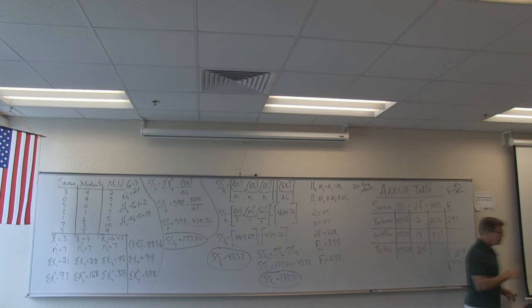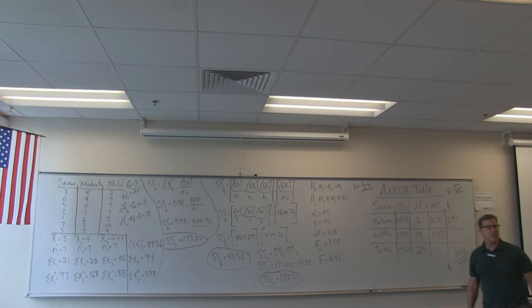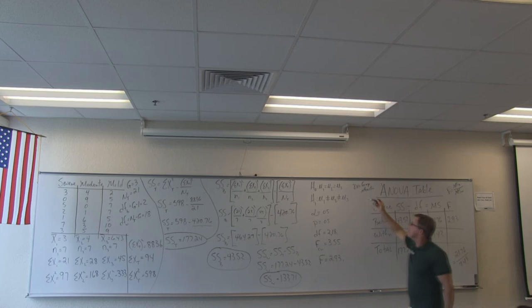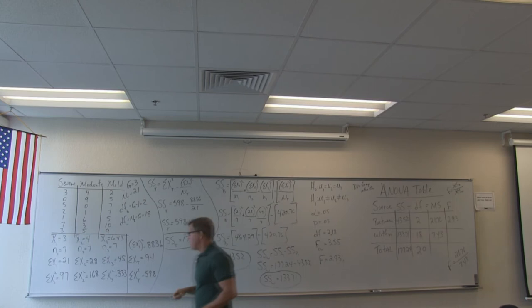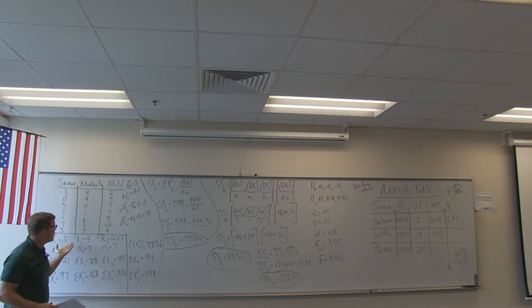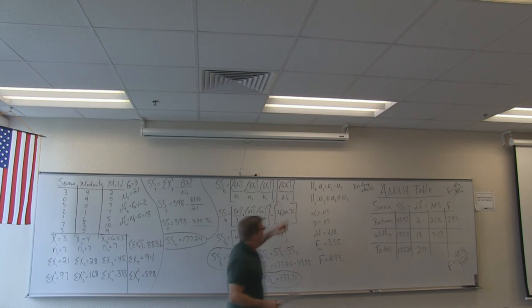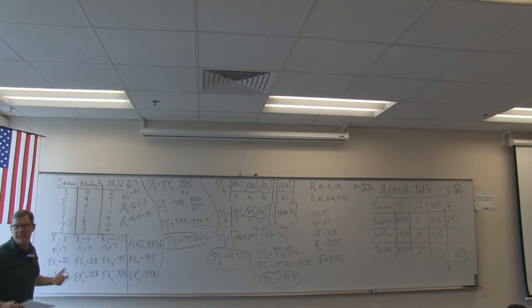We have a decision to make. We compare the calculated test statistic to the critical value. We see that 2.93 does not exceed 3.55. Therefore, our decision is to accept the null — accept the statement that there's no difference in the population. Despite the sample mean difference, we don't have enough evidence to conclude it's real. What's most likely happening is that there's no difference in group attraction across these three groups — they're all equally attracted to their fraternity or sorority.